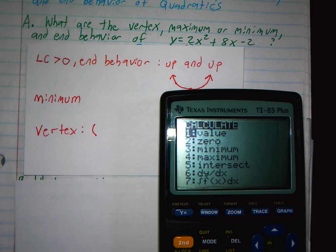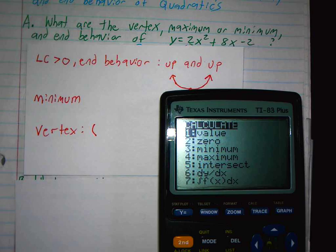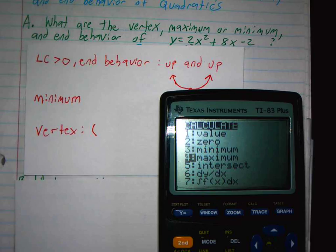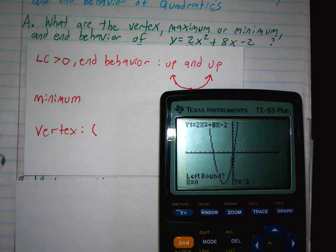Now in our case this is going to be a minimum, so go down to minimum and I'll just hit enter. Your calculator is going to ask you for three things.